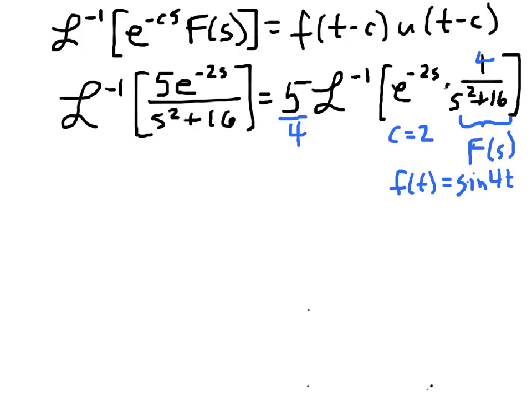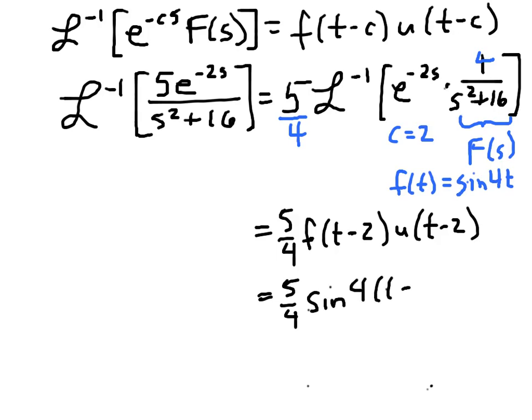So we'll have 5 fourths times little f of t minus 2 times u of t minus 2. But little f is sine of 4t, so we'll have 5 fourths, sine of 4 times t minus 2, and then times the step function u of t minus 2. If there's any concern about that u of t minus 2 multiplying the 4 times t minus 2 before the sine function, we could fix that by putting some square brackets in there like that. So that's the inverse transform of that function. And we'll do one more and then call it good on these.